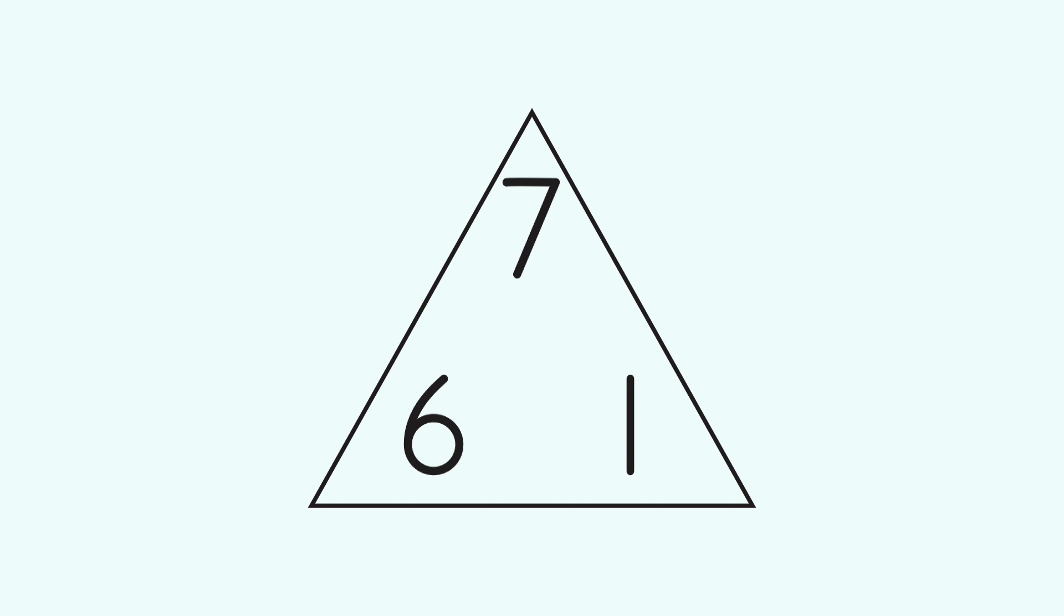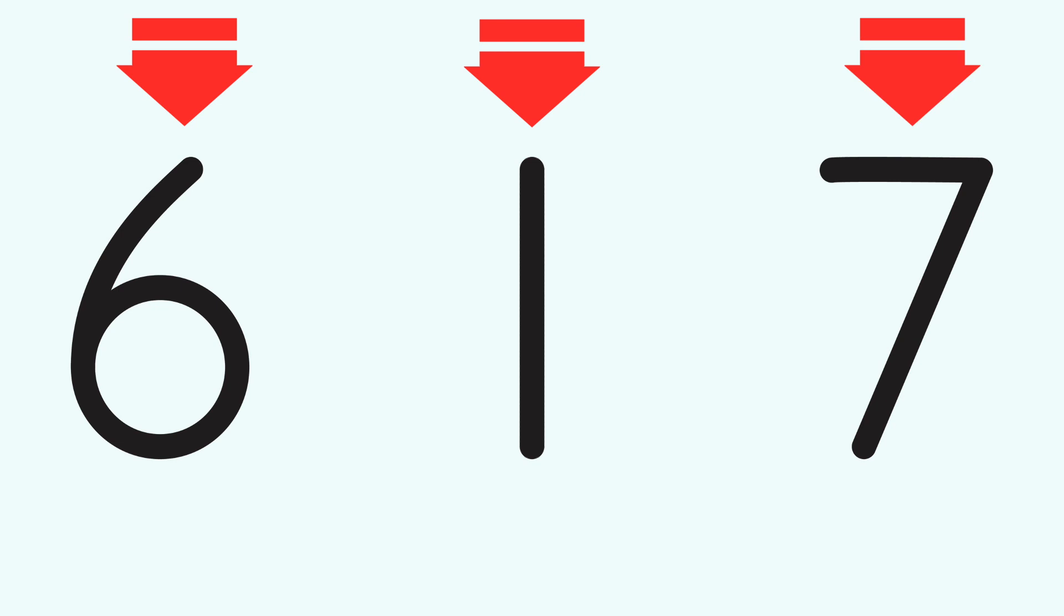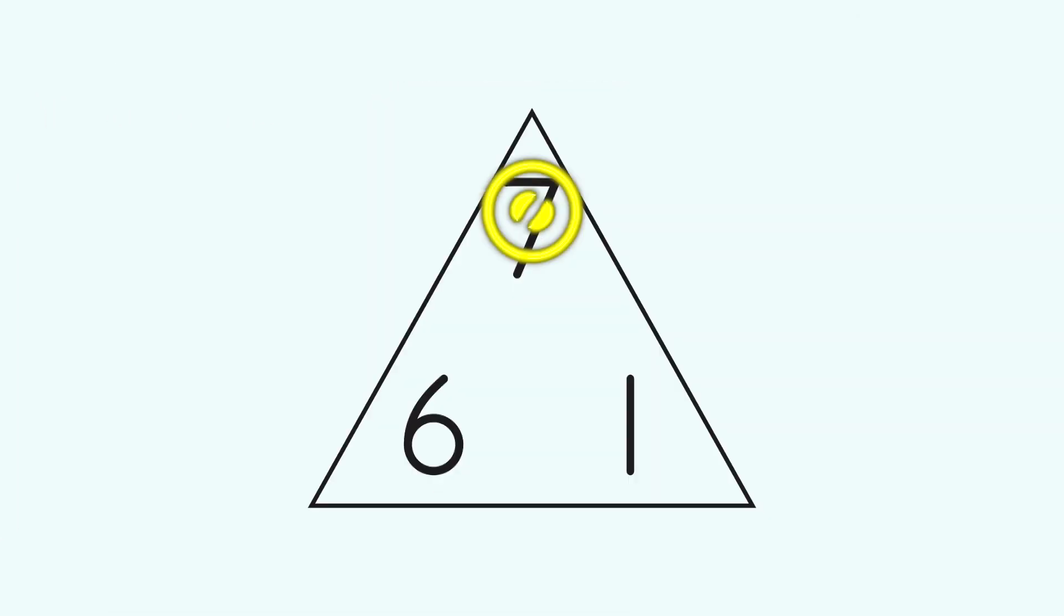To start, we can set up a fact family triangle. We'll start with a blank triangle. Today, we'll use the numbers 6, 1, and 7 to start listing addition and subtraction facts. Remember, the number of greatest value goes to the top.